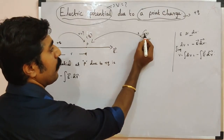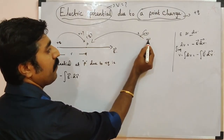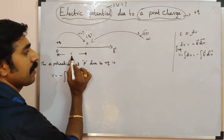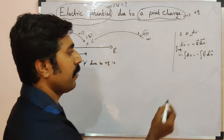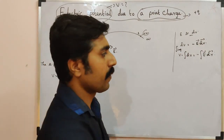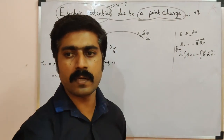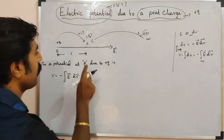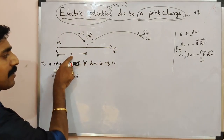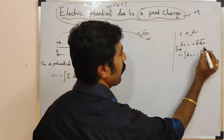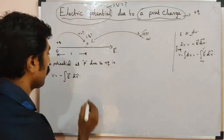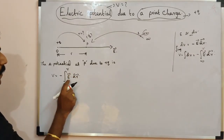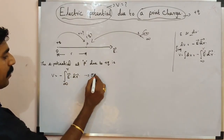We bring a positive charge from infinity to that point P at distance R. Now I will take the integration limits. The lower limit is where the work starts — that is infinity. The upper limit is point P, which is at distance R. So the integration runs from infinity to R. This is equation number one.